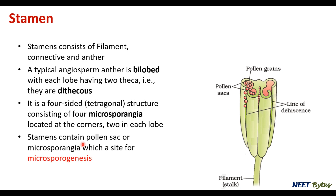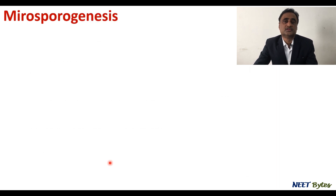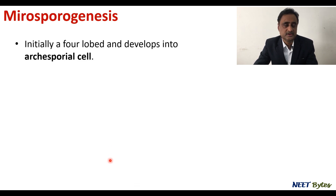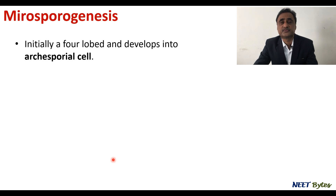The anther contains pollen sac or microsporangia, which is the site of microsporogenesis. In microsporogenesis, the starting point is the diploid microspore mother cell and the ending point is the formation of a haploid microspore. This process from diploid microspore mother cell to haploid microspore is what we call microsporogenesis.